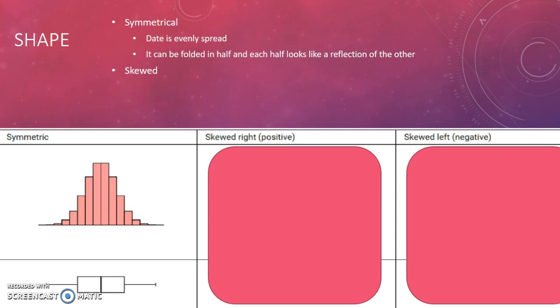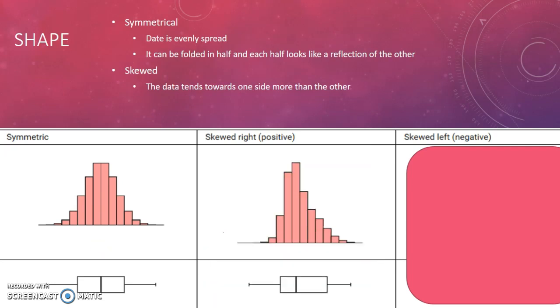The other shape the data can take is skewed. Skewed means that the data leans or tends towards one side more than the other. If we look at positive skew, you can see in this histogram a positive skew means that it scoops down and stretches out towards the bigger numbers.